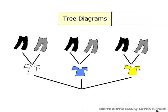A tree diagram is a way of keeping track of the information when you're looking at various possibilities. Here's a tree diagram that we might draw to consider the different ways that Ed can dress. It's called a tree because it looks like a tree — there's a root at the bottom and then branches going upward from there.